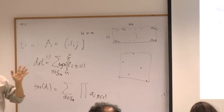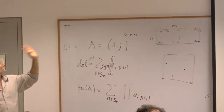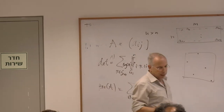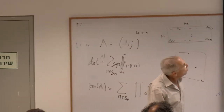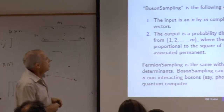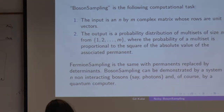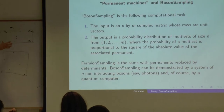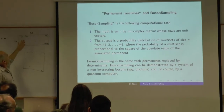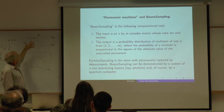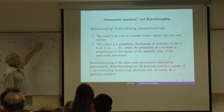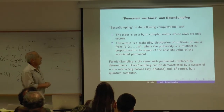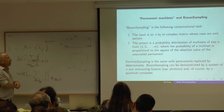I should mention that when there are repetitions, we need some further normalization factors that I will ignore. Fermion sampling is the same but with the permanent replaced by the determinant — we sample according to the absolute value of the determinant of the sub-matrix squared.